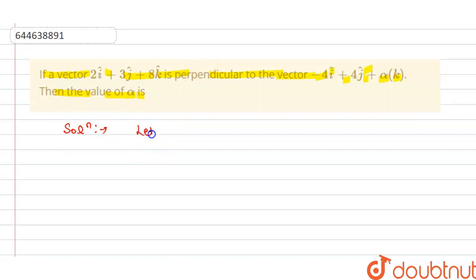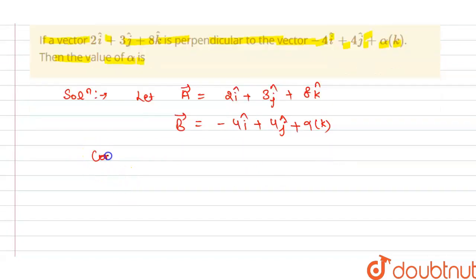Let us suppose a vector is given to us as 2i cap plus 3j cap plus 8k cap, and b vector is minus 4i plus 4j plus alpha k.